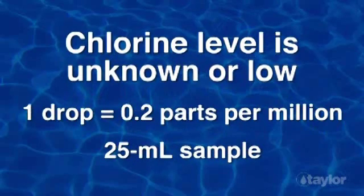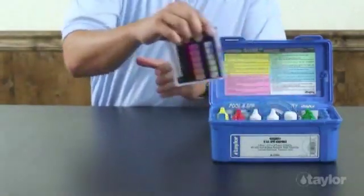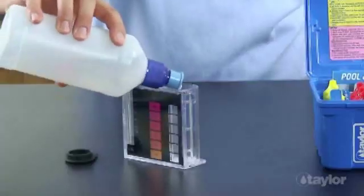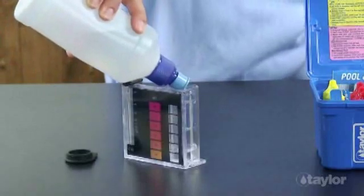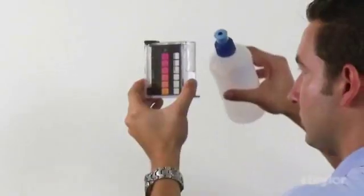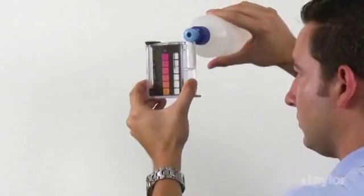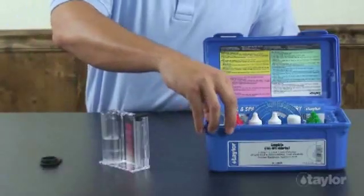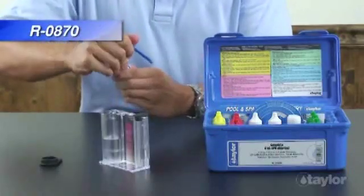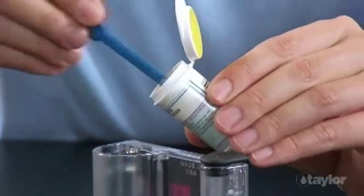This demonstration assumes the chlorine level is unknown. Rinse and fill the large comparator tube to the 25 mL mark with the water to be tested. Add two dippers of DPD powder. The scoop end of the dipper should be completely filled with the powder, but beyond this, a precise measurement is not necessary.